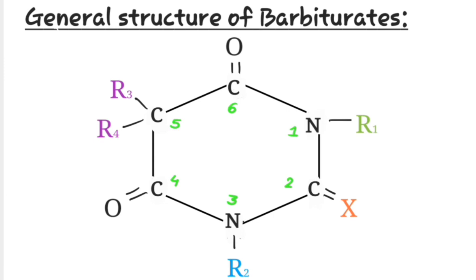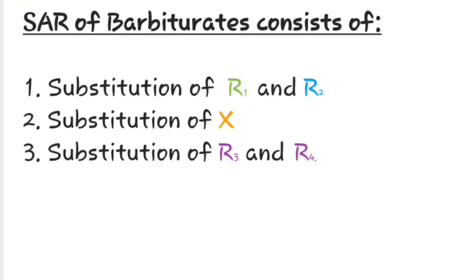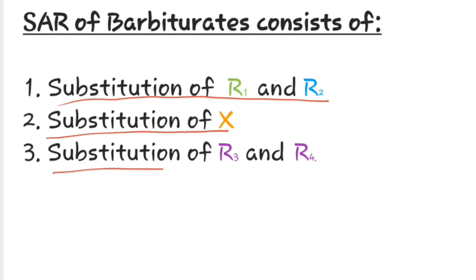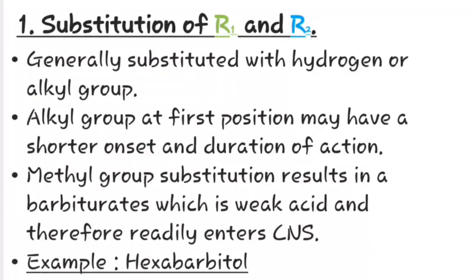This is the general structure of barbiturates and modifications could be made at the 1st, 2nd, 3rd and 5th position. SAR of barbiturates will consist of the following points: first is substitution at R1 and R2, second is substitution at X, and the third is substitution at R3 and R4, i.e. at position 5.